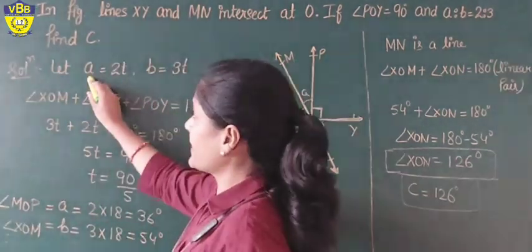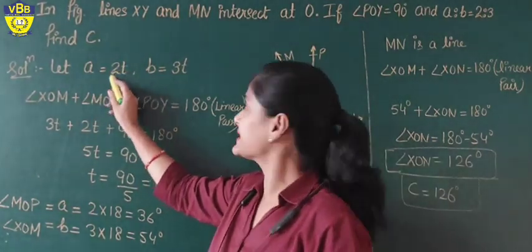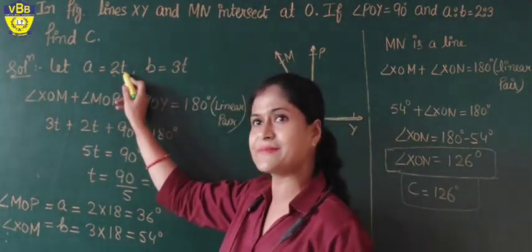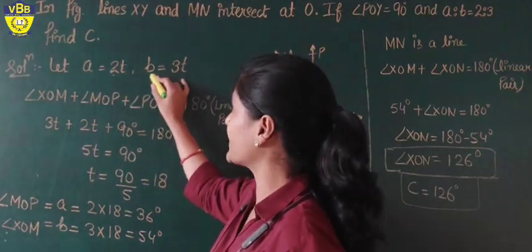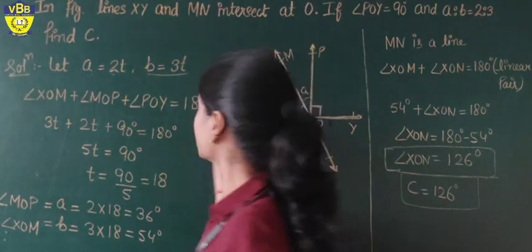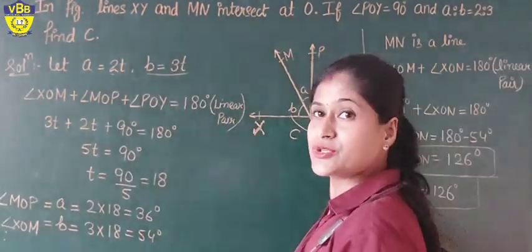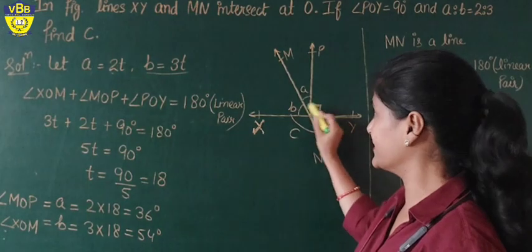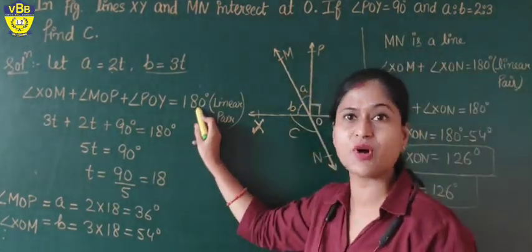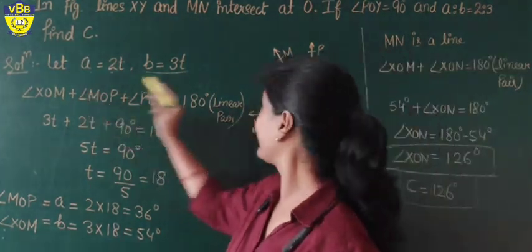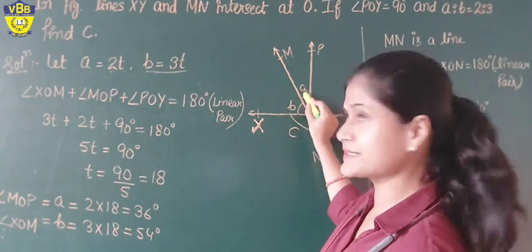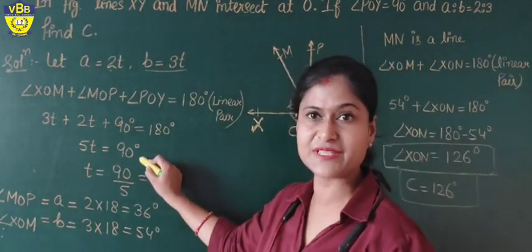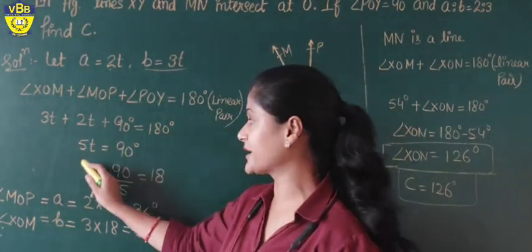Let A equal 2T and B equal 3T, since they are in ratio — we multiply by our variable T. XY is a line, so all angles on XY — angle B, angle A, and 90 degrees — form a straight line equaling 180 degrees. Transposing, 3T plus 2T equals 5T equals 90 degrees, so T equals 18.